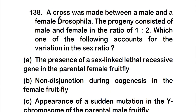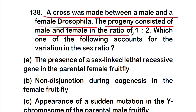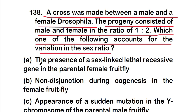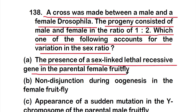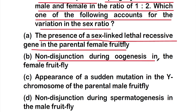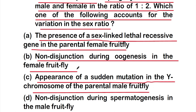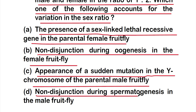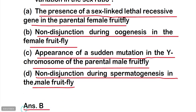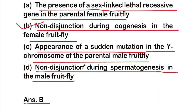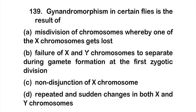Question 138: A cross was made between a male and female Drosophila; the progeny consisted of males and females in a ratio of 1:2. Which accounts for this variation in sex ratio? Options: A - sex-linked lethal recessive gene in the parental female, B - non-disjunction during oogenesis in the female, C - sudden mutation in the Y chromosome of the parental male, or D - non-disjunction during spermatogenesis in the male. The right answer is option B.